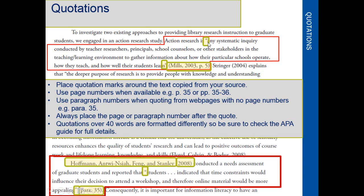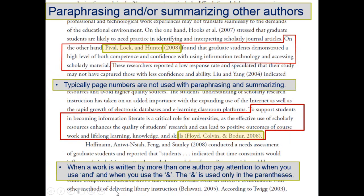Some things to keep in mind with quotations: you want to place quotation marks around the text copied from those other sources. You use the author's last name, the year, and the location — it could be a page number, or if it's from a web page with no page numbers, you can use paragraph numbers. You always want to place the page or paragraph number after the quote. Also remember that quotations over 40 words are formatted differently, so be sure to check the APA guide for more details.